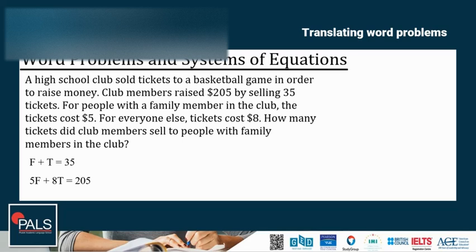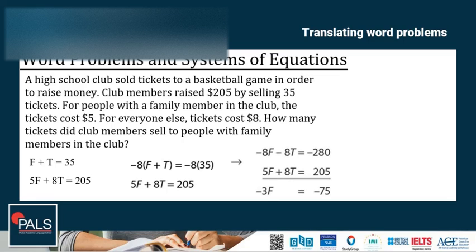Using the elimination method, we've got negative 8 times F plus T is equal to negative 8 times 35, and 5F plus 8T, so that we can eliminate T. This gives us negative 3F is equal to negative 75, so F is equal to 25. It means there are 25 tickets sold to family members.